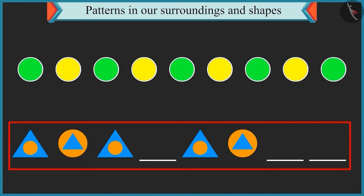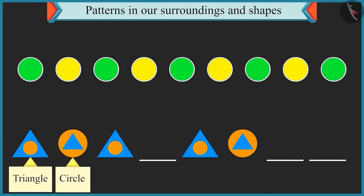This pattern is made of two shapes. Yes. You identified it right. There are triangles and circles in this pattern. Now look carefully. There is a small circle shape inside the triangle and after that there is a small triangle shape inside the circle in this pattern. This pattern is repeated again and again.